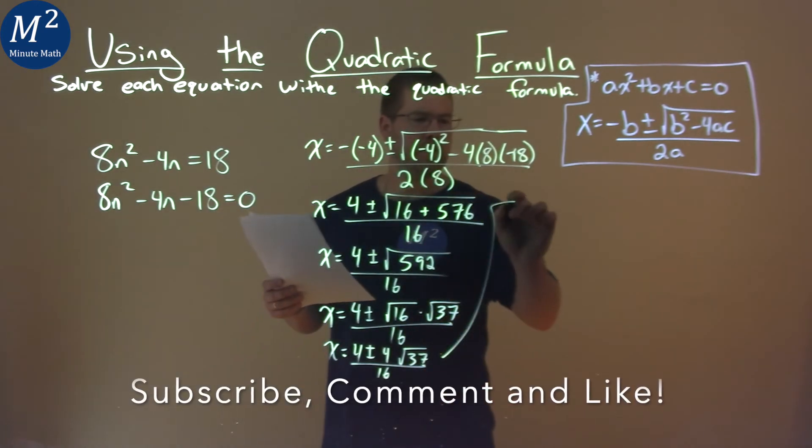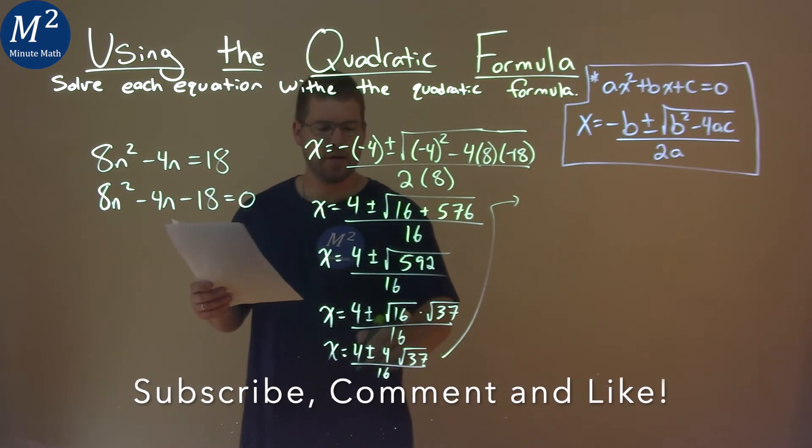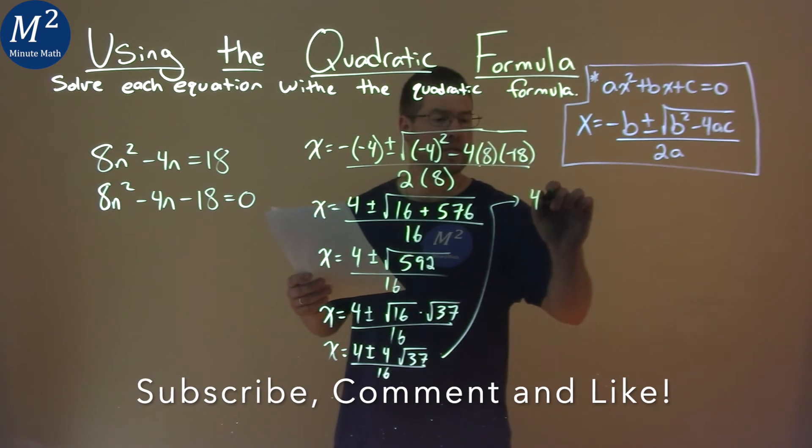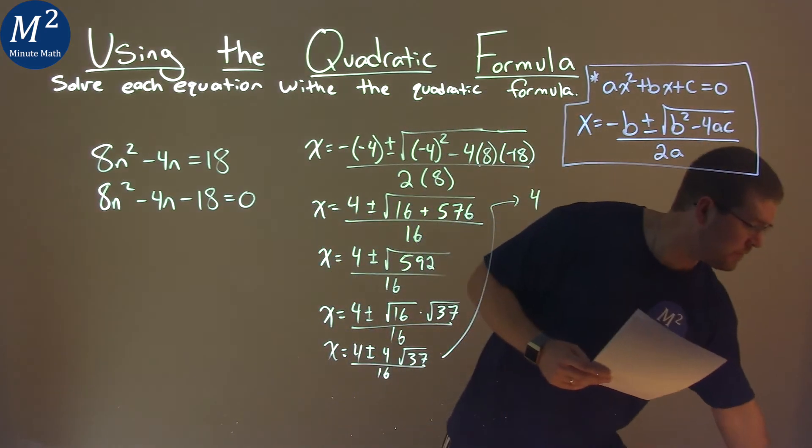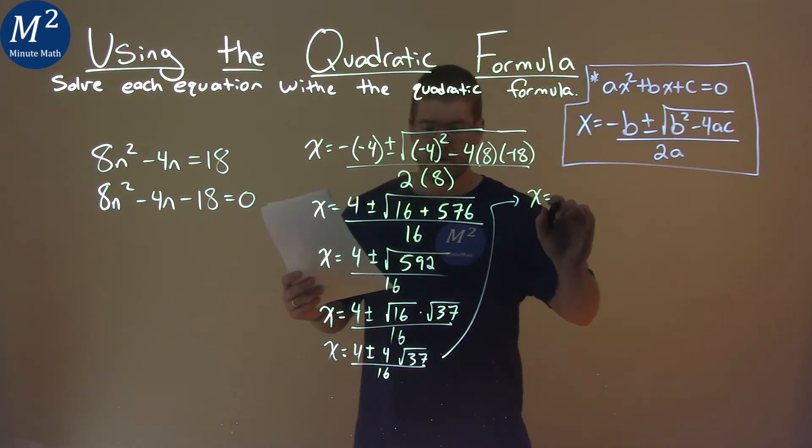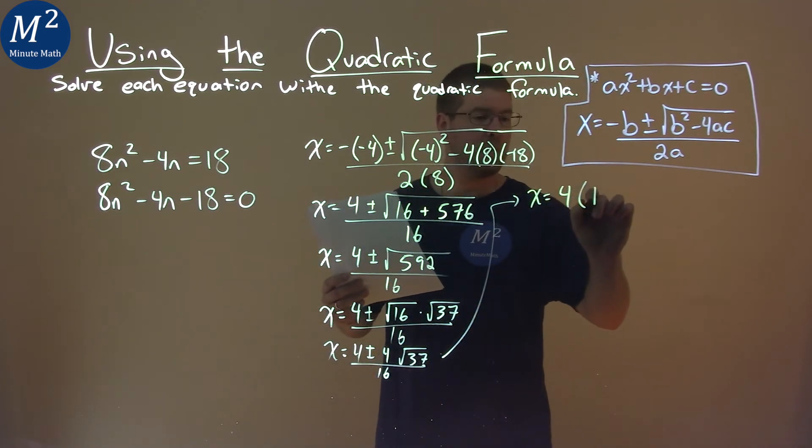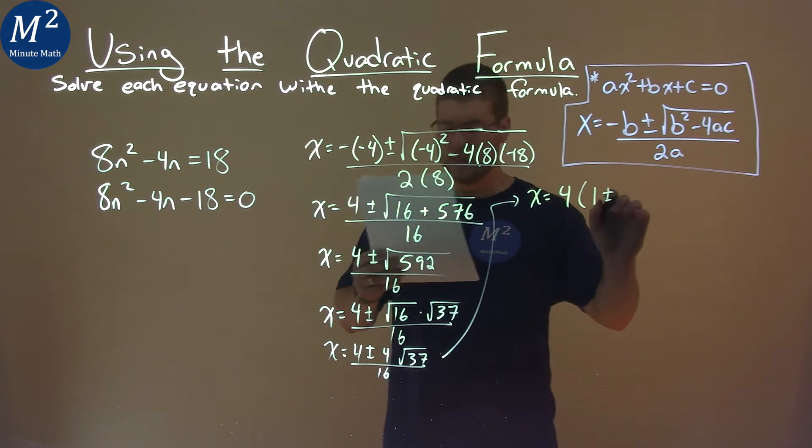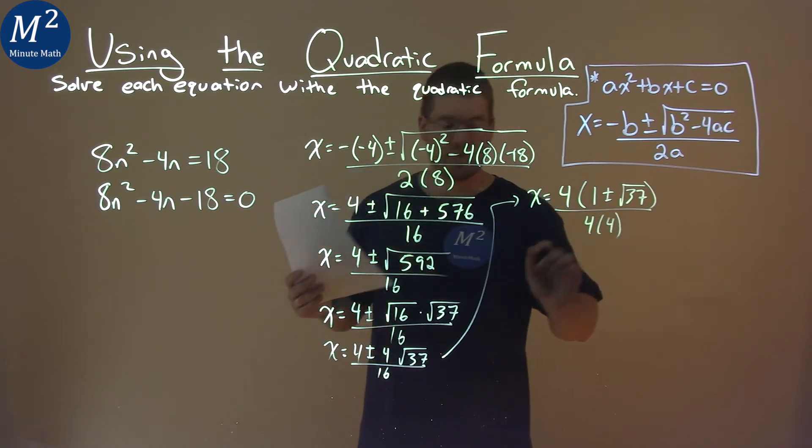What I'm going to do now here, put it right here, I'm going to pull out a 4 in the numerator. So we have 4 times, don't forget the x equals, x equals, well, 4 times 1 plus or minus the square root of 37, all over 4 times 4, which is that 16.